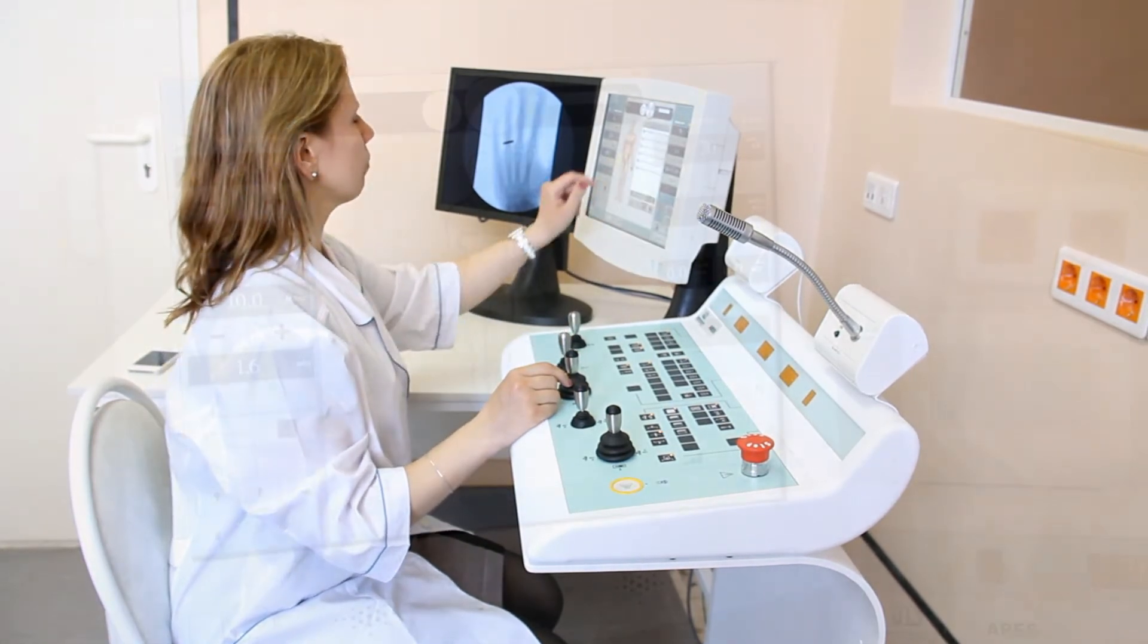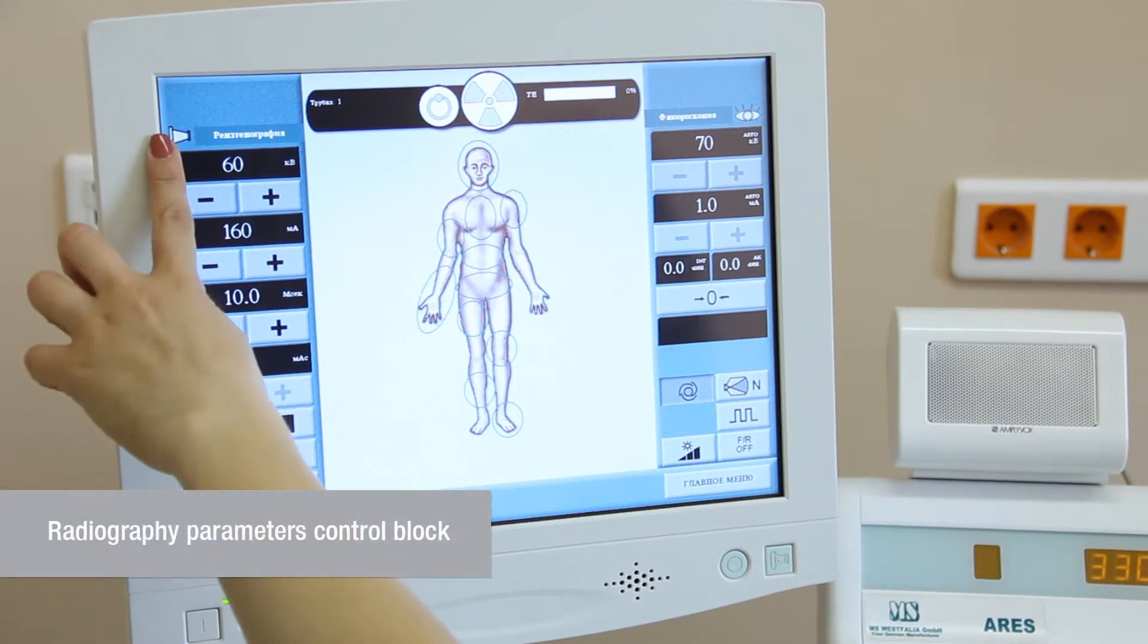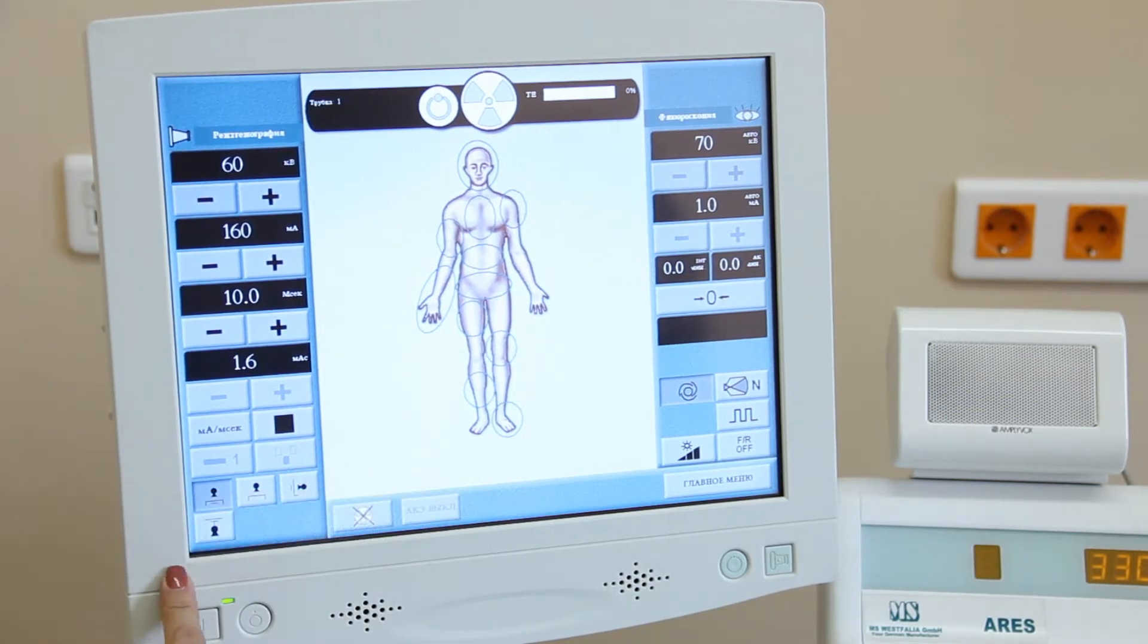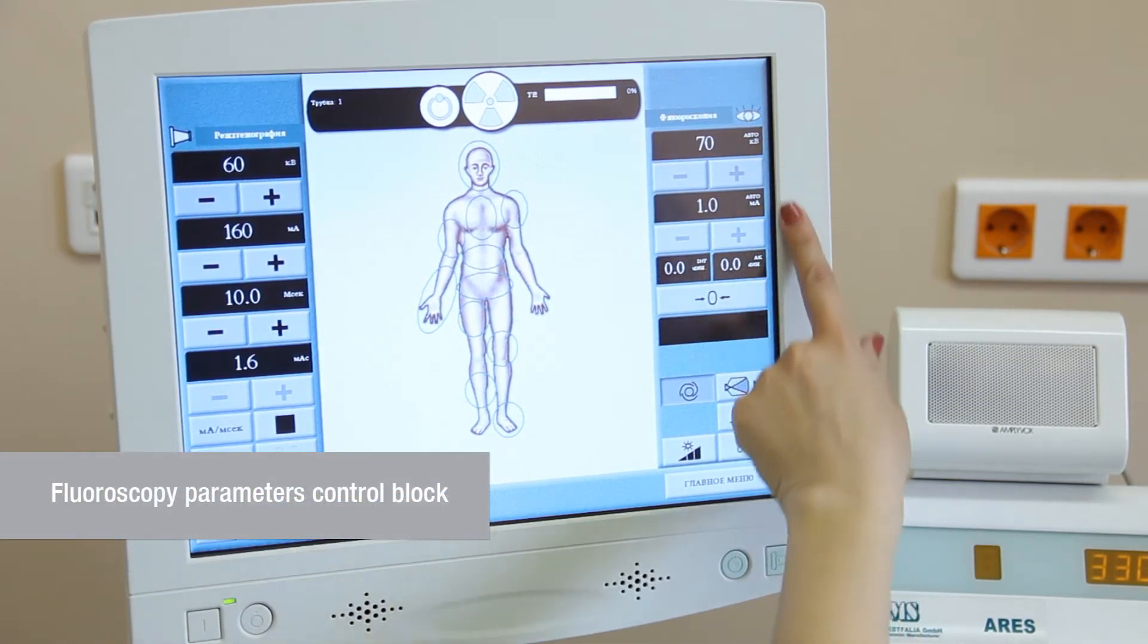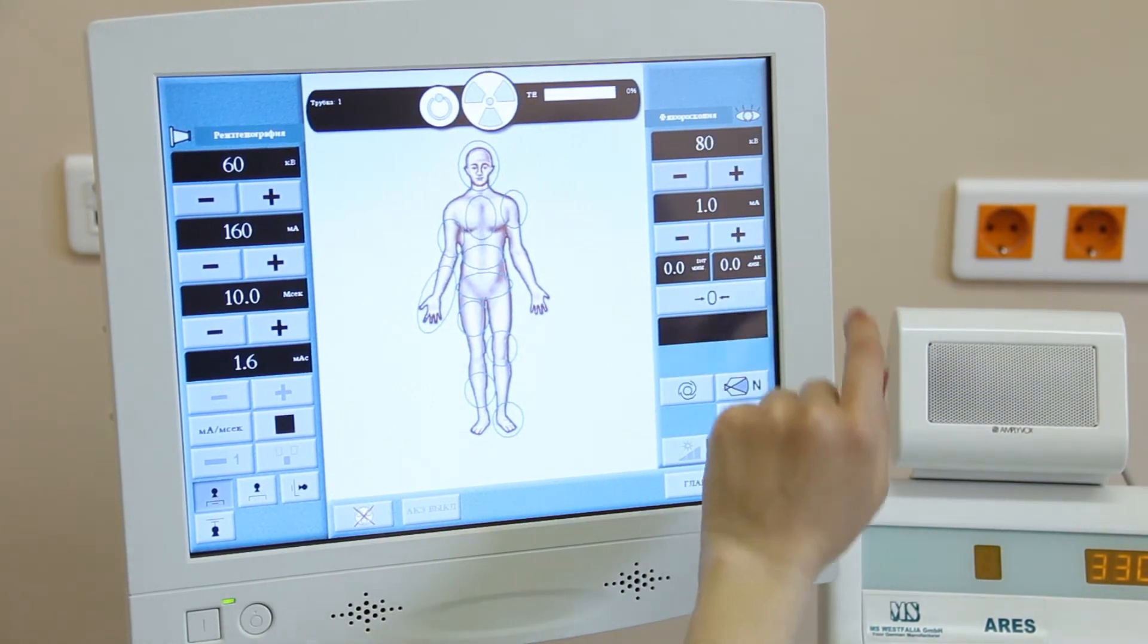Control block of radiography parameters is located on the left side. Control block for radioscopy is on the right side. Parameters for radioscopy may also be adjusted manually.